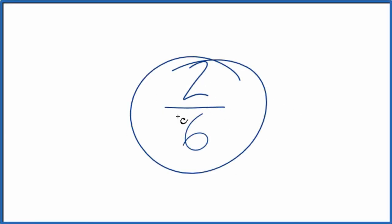Here's how you convert the fraction 2 sixths to a decimal. The first way to do it, you could just divide 2 by 6 on your calculator.